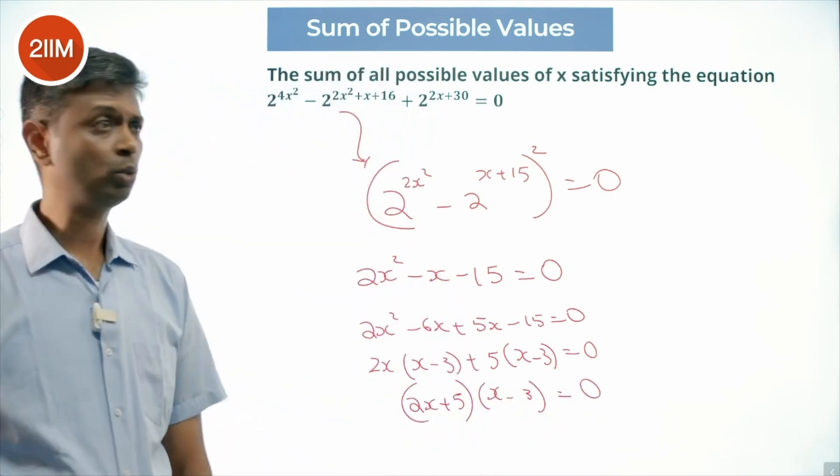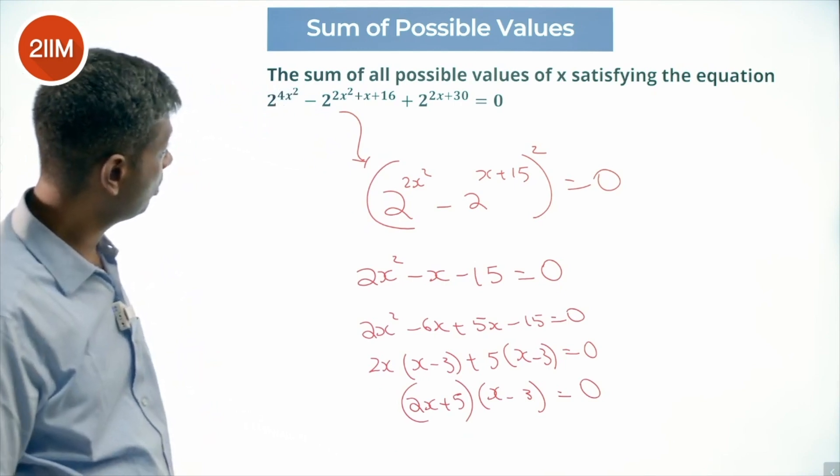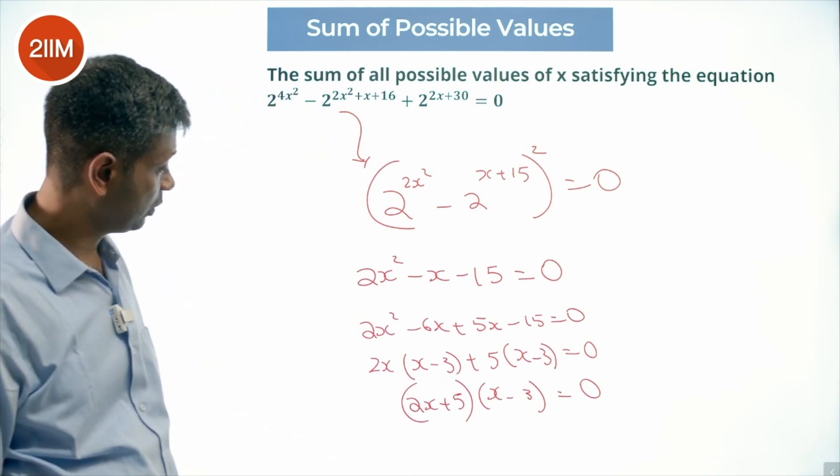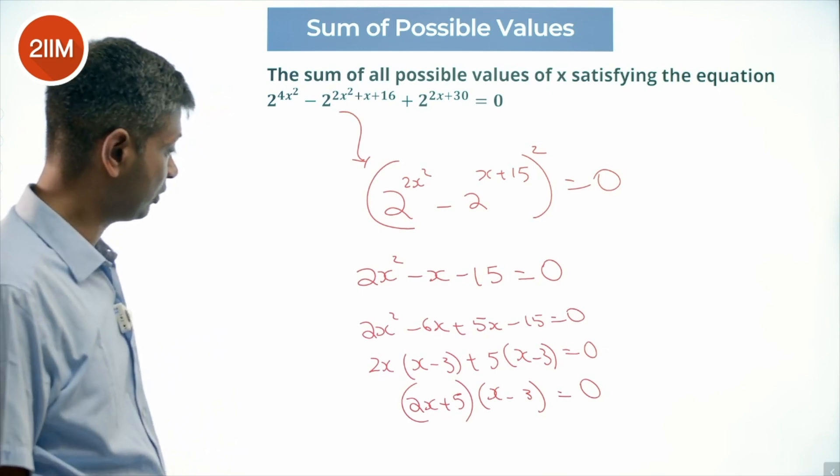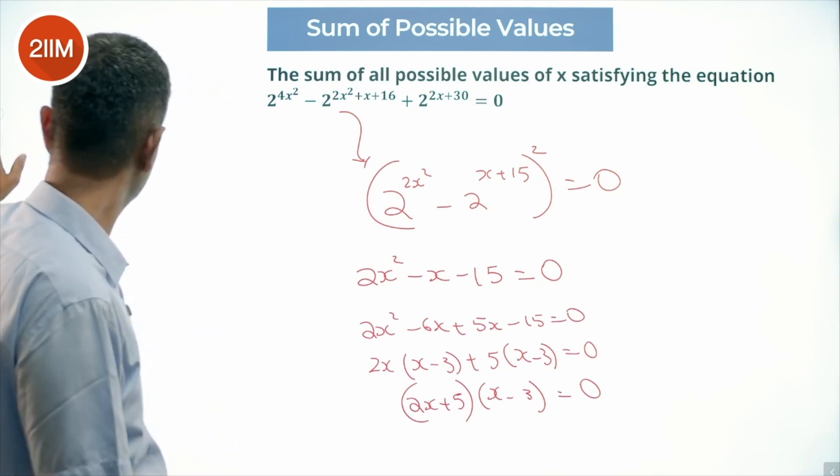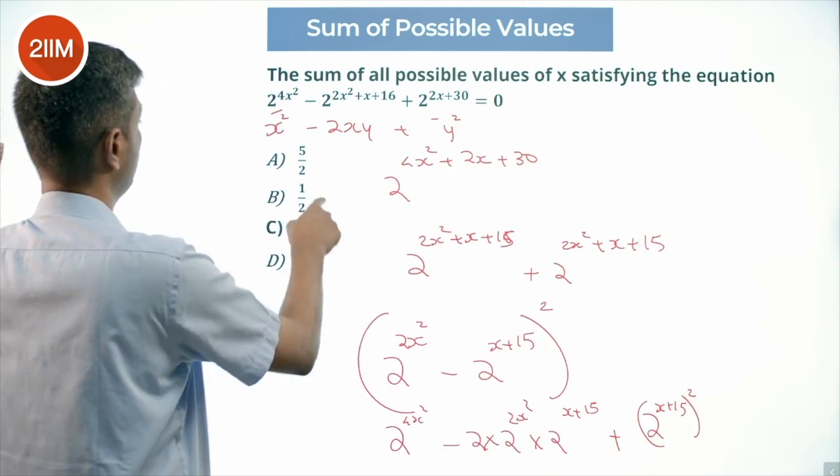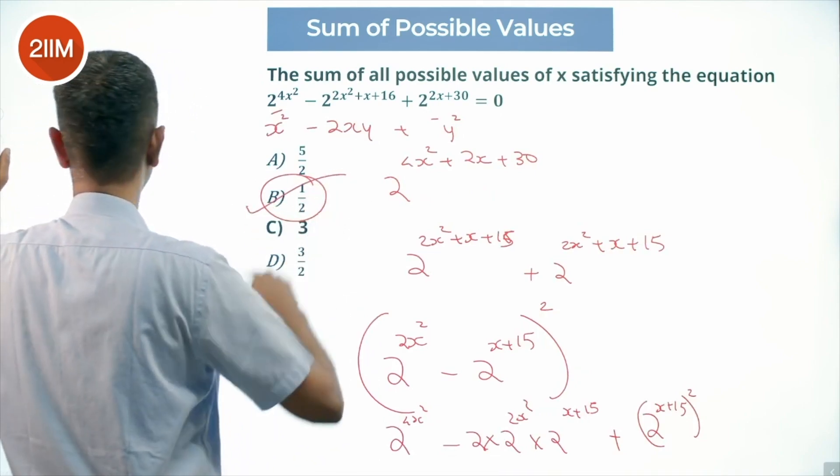x is minus 5 by 2 or plus 3. Sum of all possible values of x satisfying the equation, all possible values of x minus 5 by 2 plus 3, which is half. Hopefully half is there among the choices, as indeed it is there.